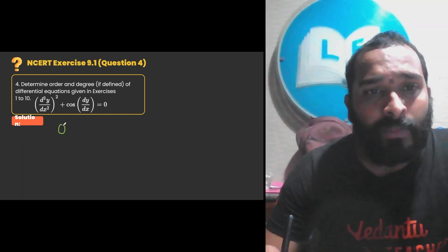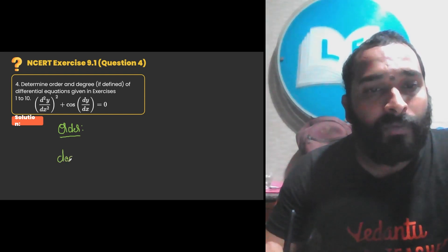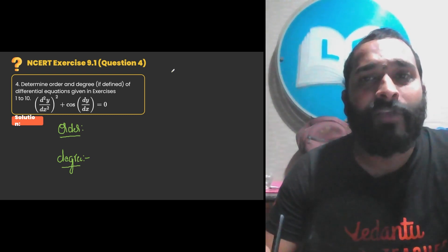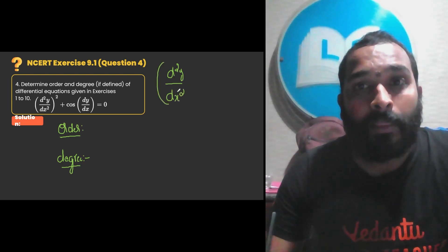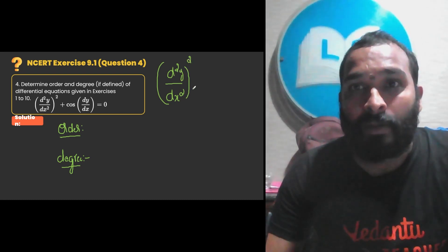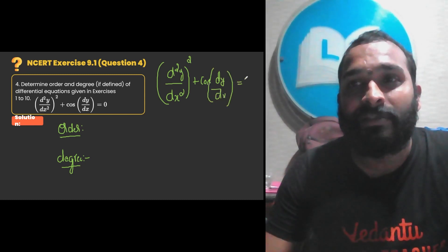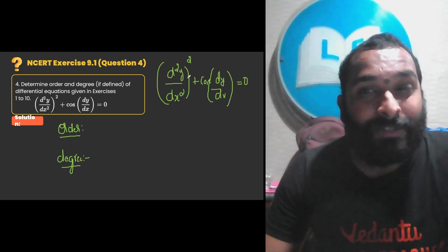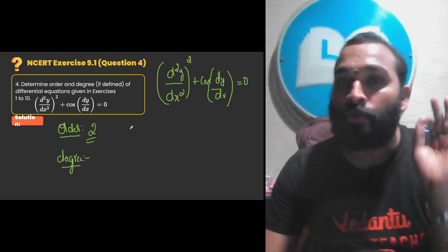The given differential equation is d²y/dx² whole squared plus cos of dy/dx, equal to 0. The highest derivative is d²y/dx², so order is 2. Now is the degree defined? Is it a polynomial in its derivative? No — it is not a polynomial because we have cos of dy/dx. So it is not a polynomial in its derivatives. Hence, degree is not defined.